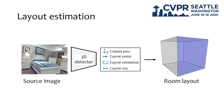Besides the 3D object detection, for the layout estimation it shows a similar structure to our 3D detector, and it generates the box parameters of the layout bounding boxes.